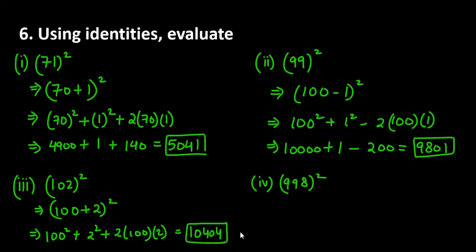This is the fourth part where 998 is. 998 we can write it as 1000 minus 2 whole square. Now we apply which identity, a minus b whole square. So 1000 square plus 2 square minus 2 into first term into second term.